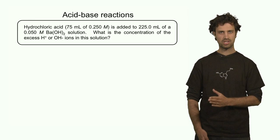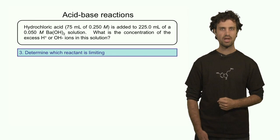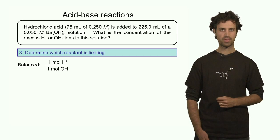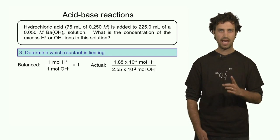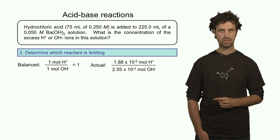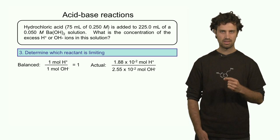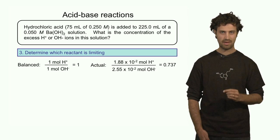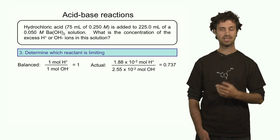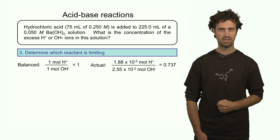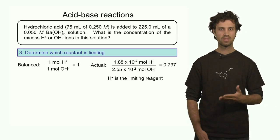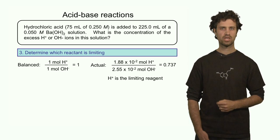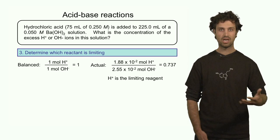We want to determine which one — the proton or the OH⁻ — is the limiting reagent. We know the balanced ratio is one mole of protons for each one mole of OH⁻, which is 1. However, the actual ratio is 1.88 × 10⁻² divided by 2.55 × 10⁻², which is 0.737. That number is less than 1, which means the numerator is the limiting reagent. H⁺ is the limiting reagent — H⁺ will run out during the reaction, and OH⁻ will be in excess. So after the reaction has been completed, I have no H⁺ left, but I do have OH⁻ left. The solution is still basic; it is not neutralized.